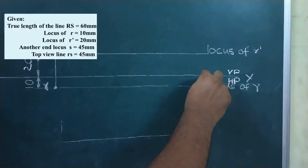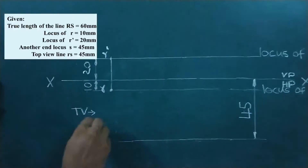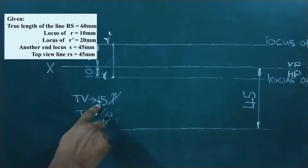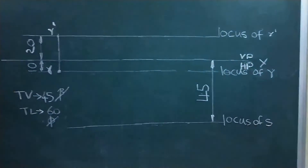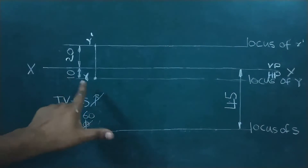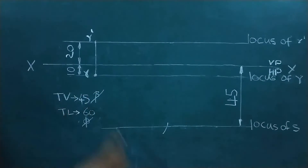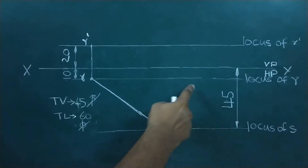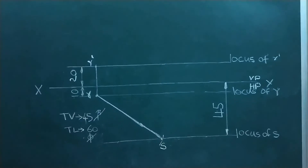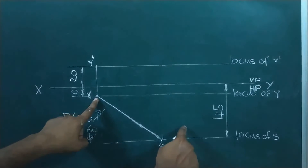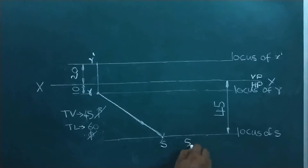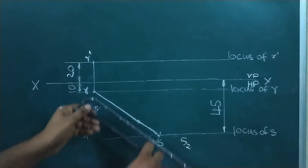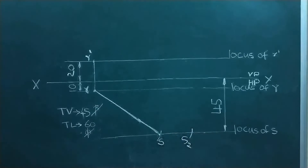Now check the given data. We have our top view length, that is RS = 45 mm. Take that distance in compass, from R make an arc in the locus of S — that is our point small letter S. We also have the true length detail, that is 60 mm. From small letter point R, take 60 mm in compass and make one more arc in the locus of S. That intersection point is S2.